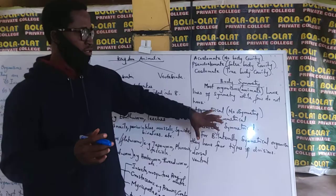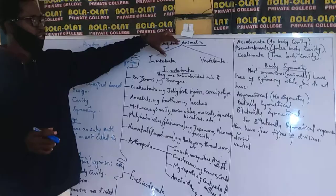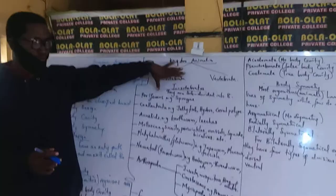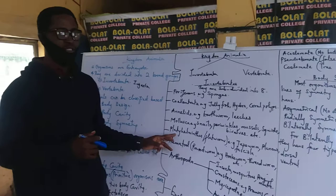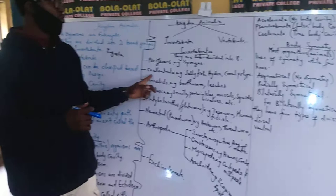Now quickly, like I said earlier, animals are divided into invertebrates and vertebrates. Invertebrates are animals without a backbone. Vertebrates are animals with a backbone. Invertebrates are eight in number. You have the Porifera, the Coelentrata, the Annelida, the Mollusca, Platyhelminthes, Nematoda, Arthropods, and Echinodermata. This is eight.